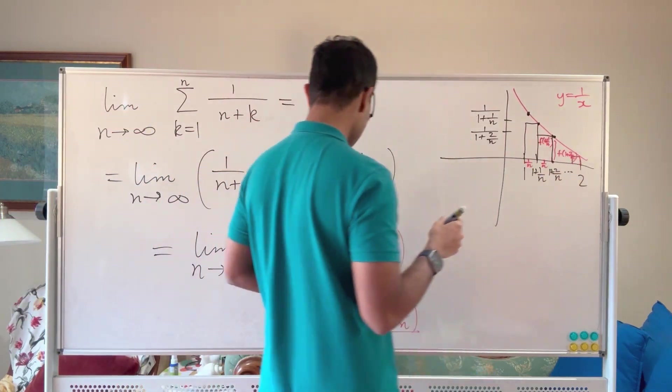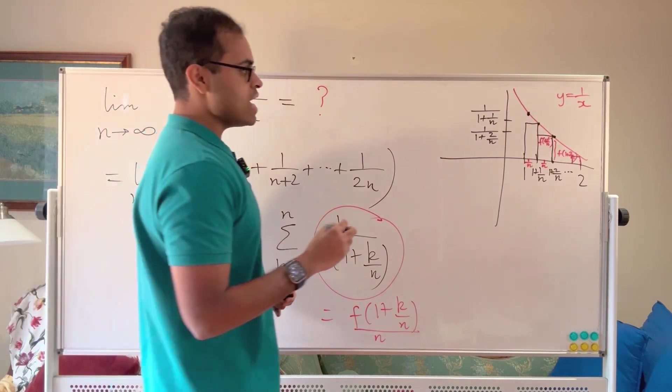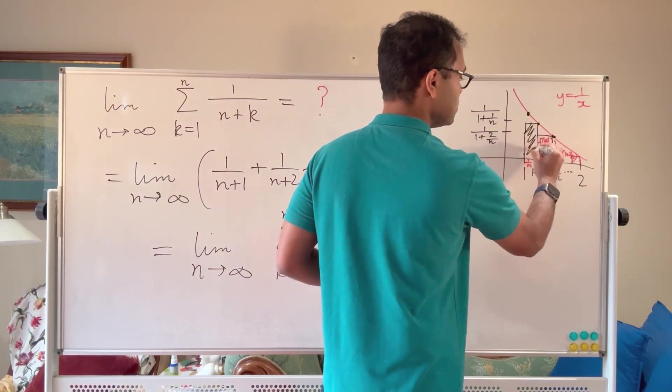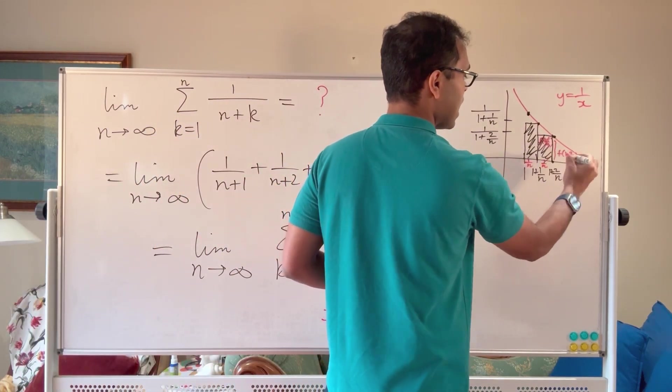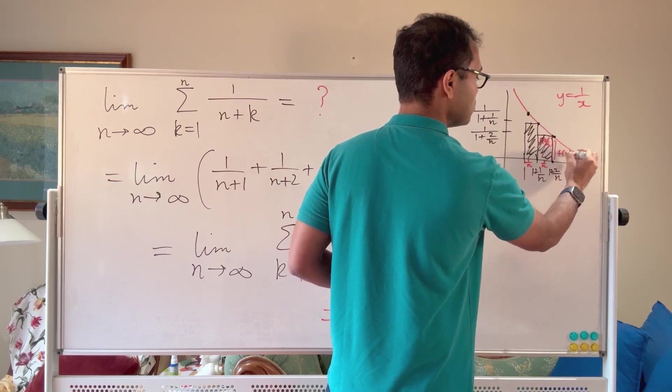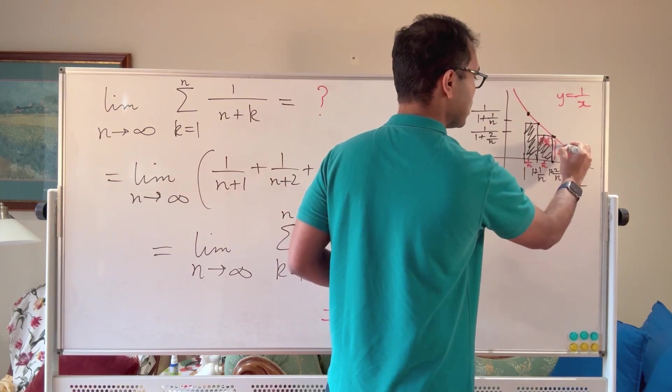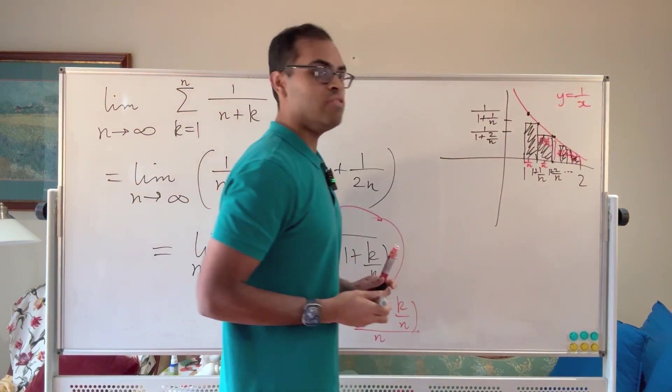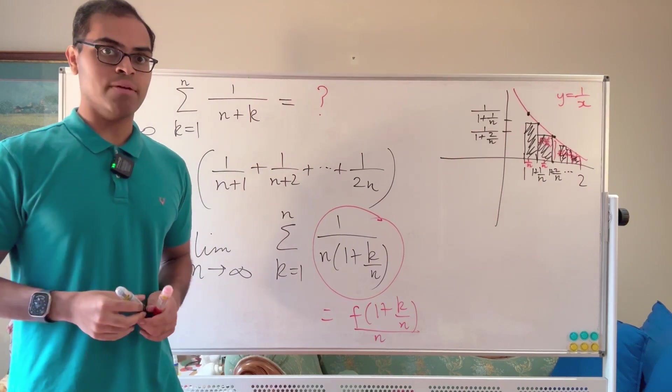So what you're doing when you're taking this sum is you're just adding up the areas of all these rectangles. You're taking this area, this area, this area, etc. It's always base times height. So you're always adding up these areas and you've got n of these rectangles which you're adding up the areas of.